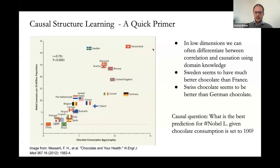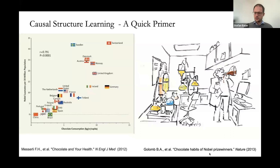The key question is: what is the best prediction for the number of Nobel prizes if we set chocolate consumption to a hundred on the x-axis? We go out of the area where we have data, we intervene, and ask what would be the expected number of Nobel prizes. You could answer that there's no effect, that the number would increase, or that it might even go down. An interesting paper published in Nature surveyed Nobel prize winners and many of them actually attributed their success to chocolate consumption, or mentioned they might have consumed twice as much had they known.